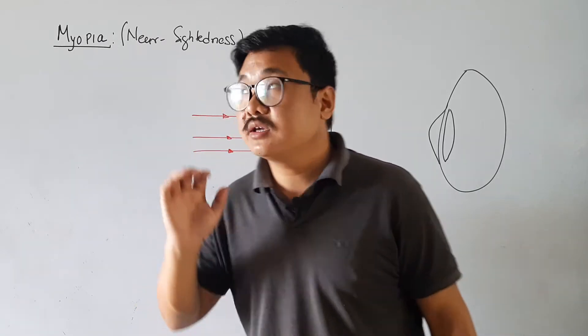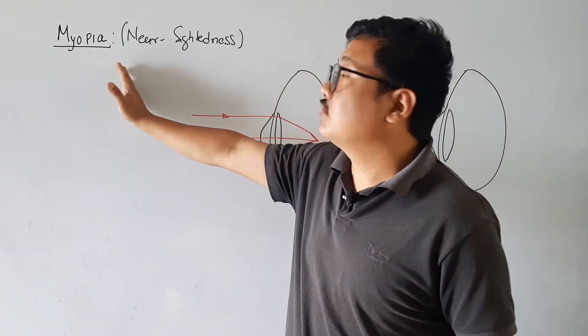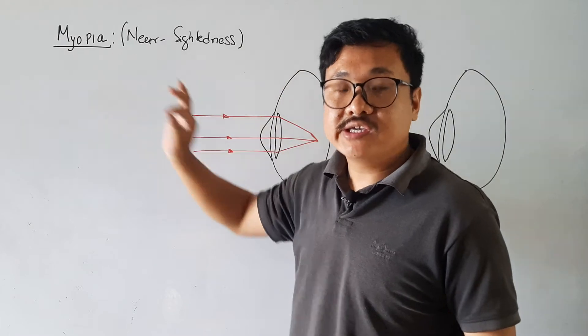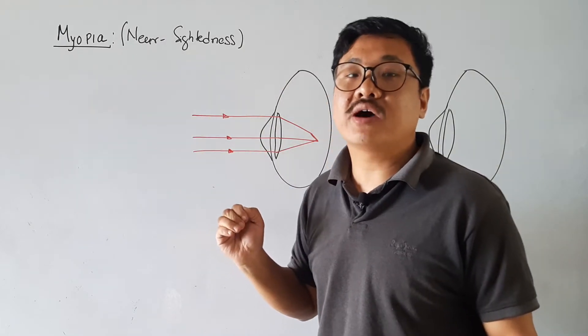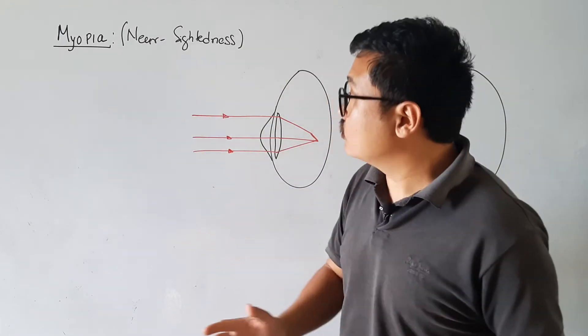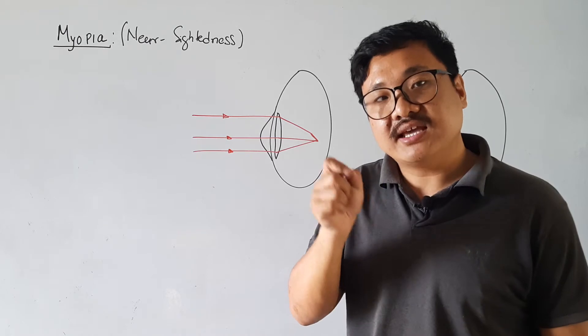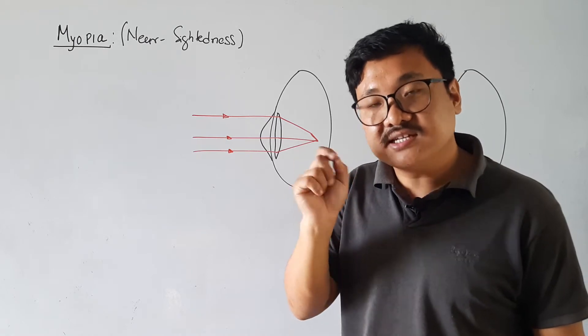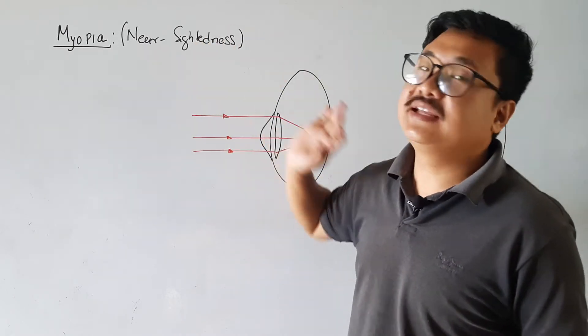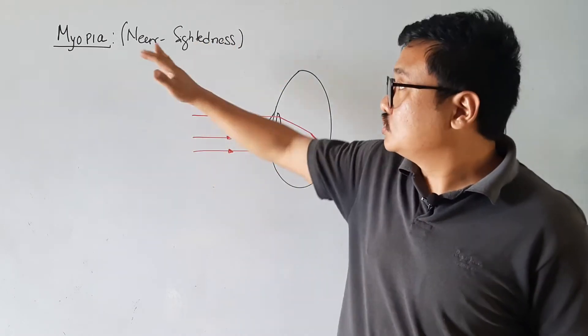One of the defects in vision is myopia. Myopia is also called nearsightedness — N-E-A-R-S-I-G-H-T-E-D-N-E-S-S.